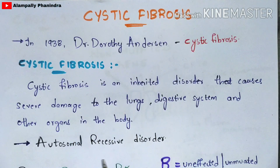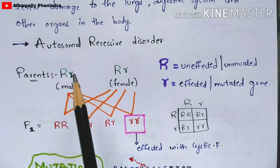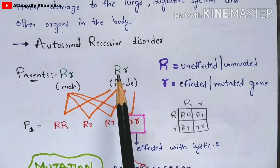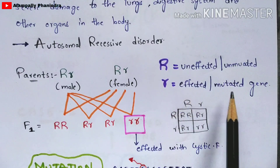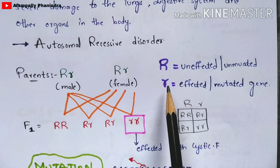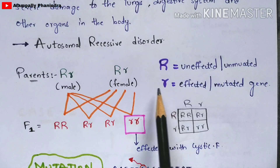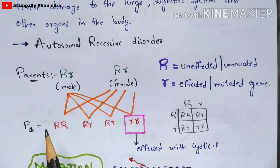Cystic fibrosis is an autosomal recessive disorder. For example, if we take parents — male and female — both consist of alleles: capital R and small r. Capital R indicates an unaffected or unmutated gene, while small r indicates an affected or mutated gene. We take the male and female parents and fuse them to get the F1 progeny.